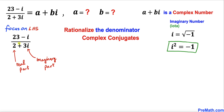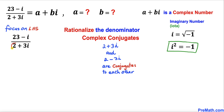Just keep in mind that 2 is called the real part and the part that has i with it is called the imaginary part. The conjugate of 2 plus 3i is simply 2 minus 3i.